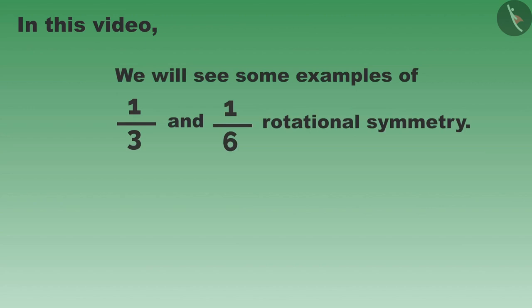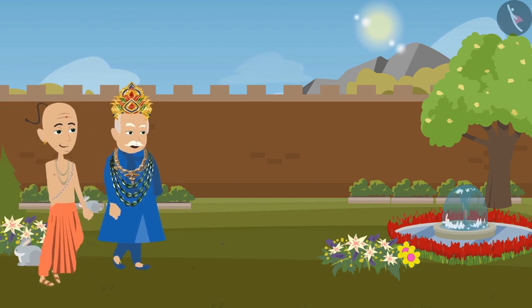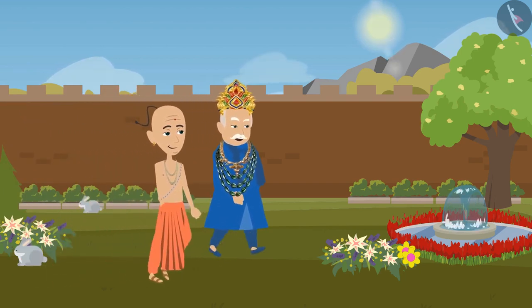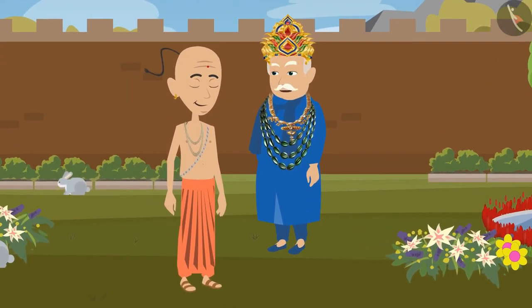see some examples related to them. King Krishnadeva Rai and Tenali Rama were taking a walk in the garden. 'Tenali Ramaji, you have solved the puzzle of locks with your wisdom. Can you name some more objects that will remain the same even after one-third rotation?'